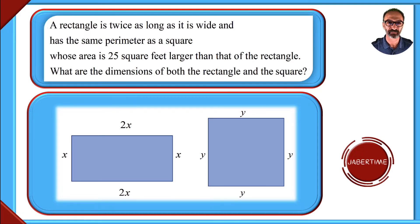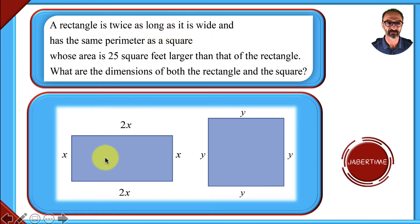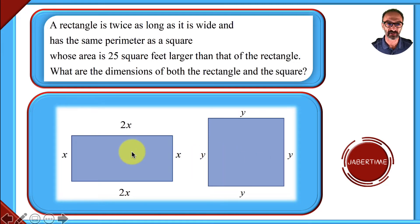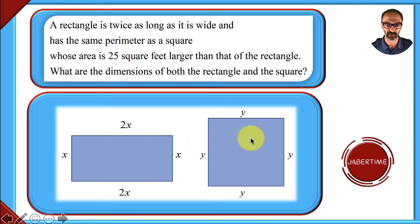Hi, welcome to my channel — Jabri Tang here. Here's a problem about a rectangle that is twice as long as it is wide, as you can see from the graph, and has the same perimeter as a square. The square has equal sides, so I use a different letter here — y instead of x — and 2x, whose area is 25 square feet larger than that of the rectangle. What are the dimensions of both the rectangle and the square?